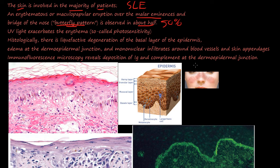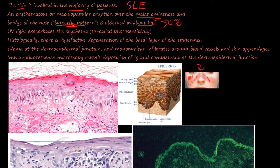Here's the malar rash. If I draw underneath the skin, this bone right here would be the zygomatic bone, this would be the maxilla, and this would be the nasal bone. This maculopapular or butterfly rash — the malar rash — is named after the malar eminence on the zygomatic bone. And it spares the nasolabial fold.